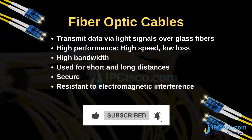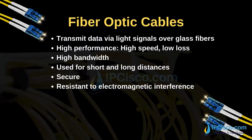Fiber optic cables are one of the network cable types that are widely used in today's networks. They transmit data via light signals over glass fibers, so the structure of these cables is fully different from copper twisted pair cables. Fiber optic cables are high performance cables, meaning they provide high speed and high bandwidth while having low loss.